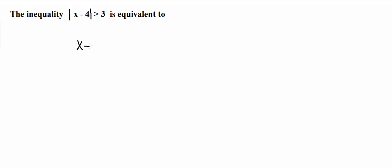You start out by just removing the absolute value signs and just writing it like this, and then you're going to have another solution. So your other solution is going to be or x minus 4 is less than, so you flip the sign and then you make this negative, negative 3.